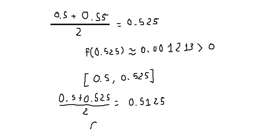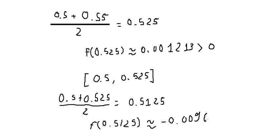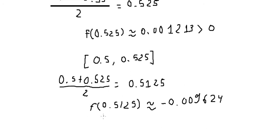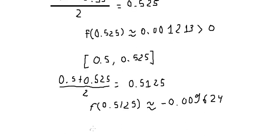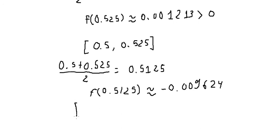We evaluate f(0.5125), which is approximately negative 0.009624. Since this is negative, we replace 0.5 with 0.5125. The new interval is now [0.5125, 0.525].